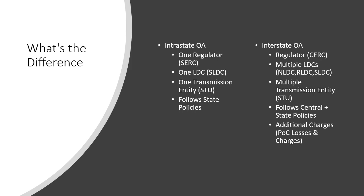There are additional charges for interstate open access. If it is brown power or power exchange power consumed through the interstate network, you are liable to pay Point of Connection (POC) losses and charges to Power Grid. However, if it is renewable or green power, POC charges are exempted when wheeling from one part of India to another, though you still need to pay POC losses to Power Grid for using their transmission network.